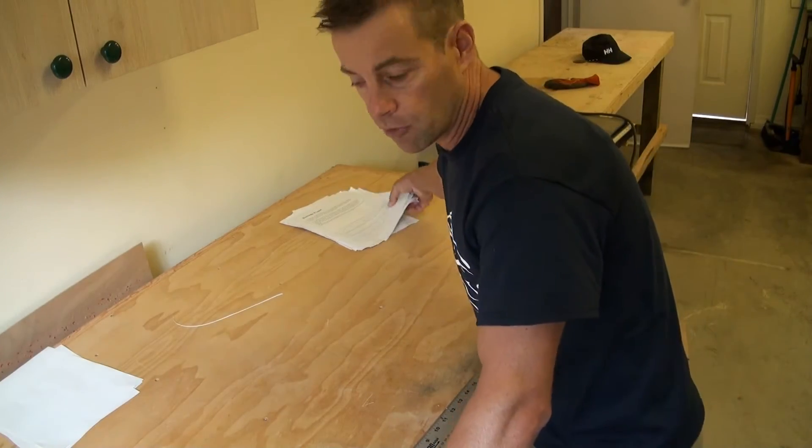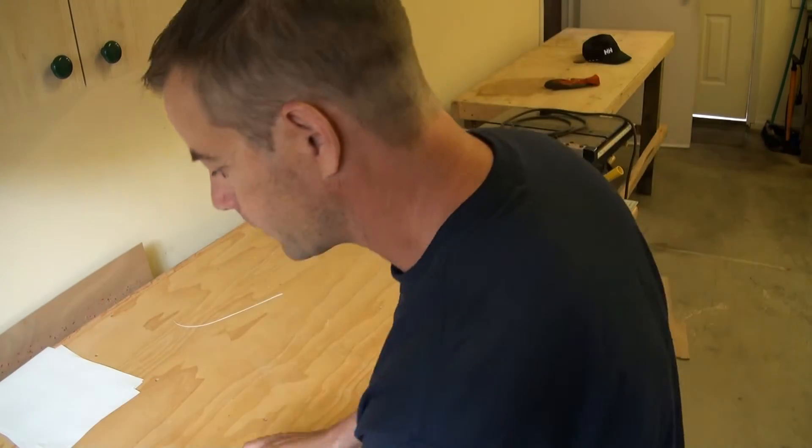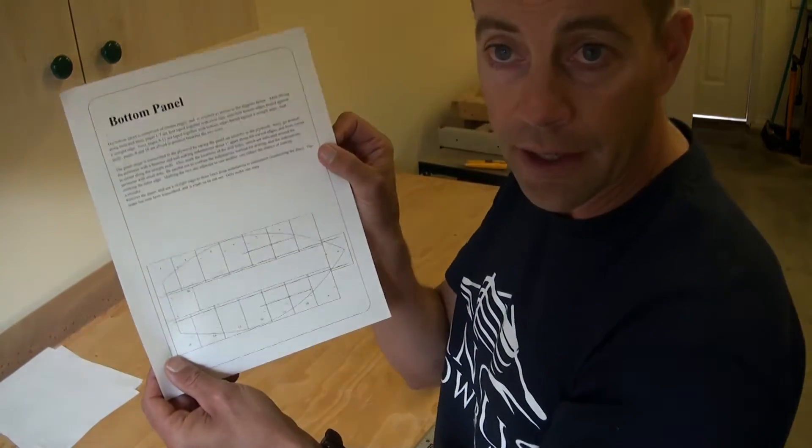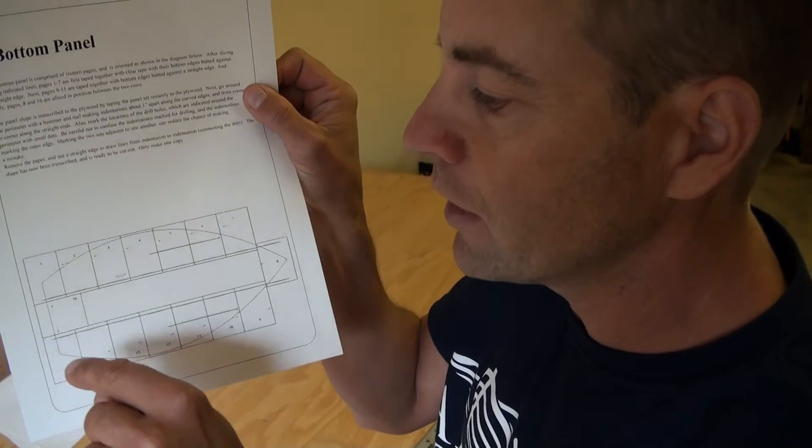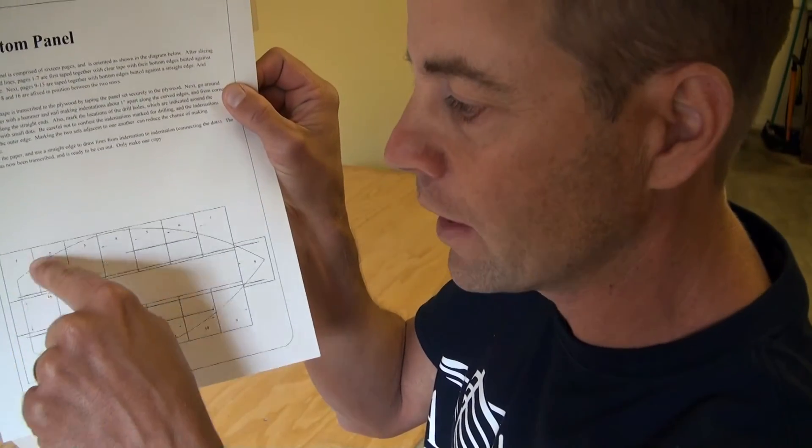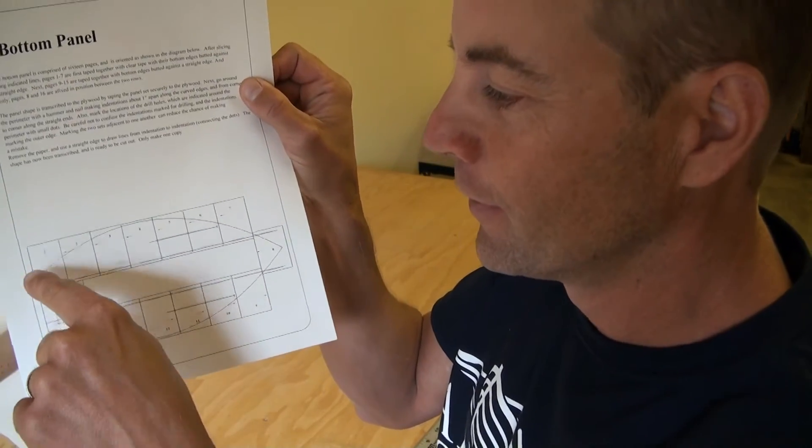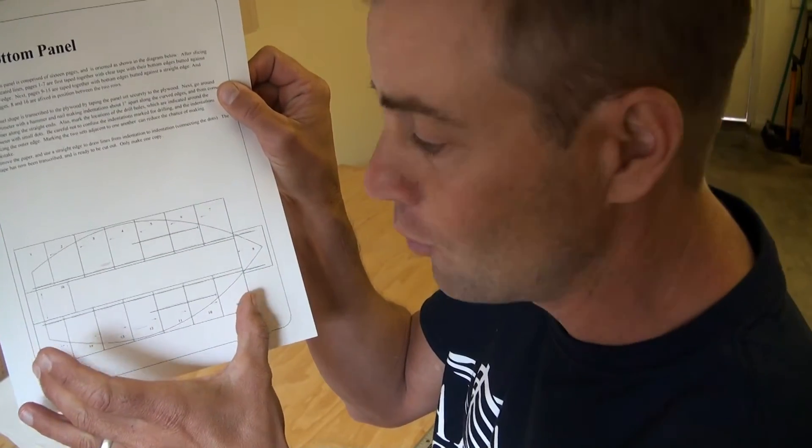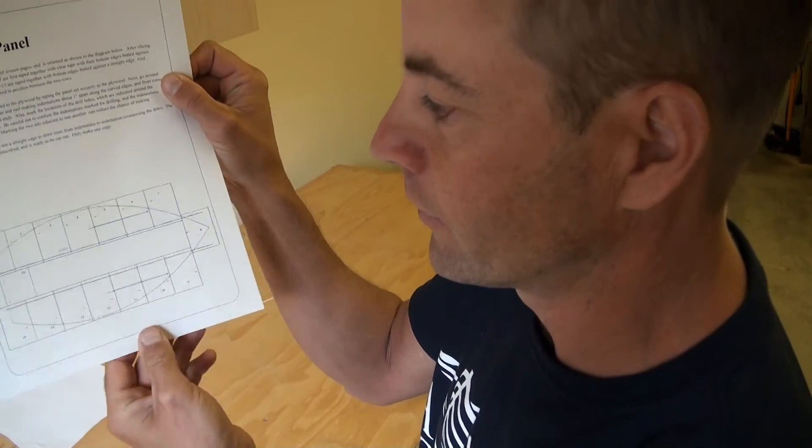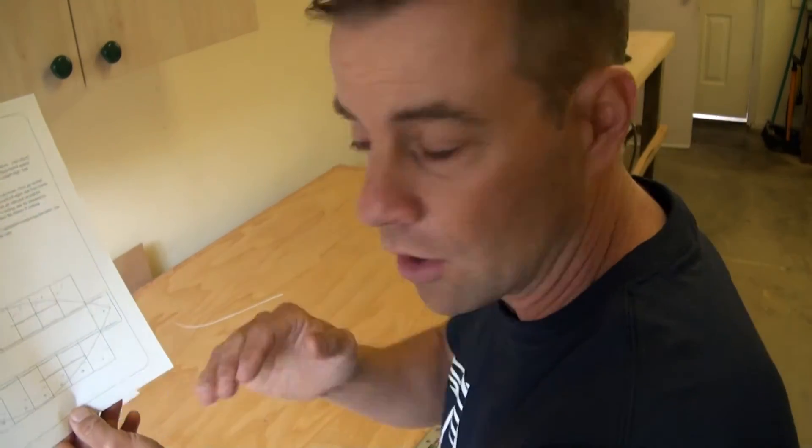So the next panel that we're creating as we go through our booklet is the bottom panel. So this is the bottom panel here, you can see the overall shape that it's going to be and the way we create this is basically we put one set together the top edge or bottom depending what we have the paper, but you create that row and then that row and then you insert the two middle pieces.